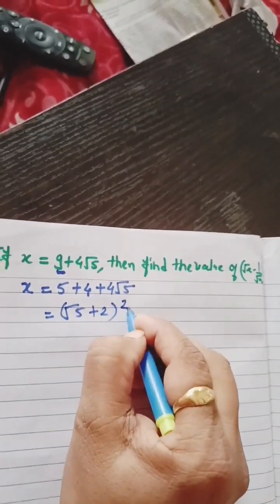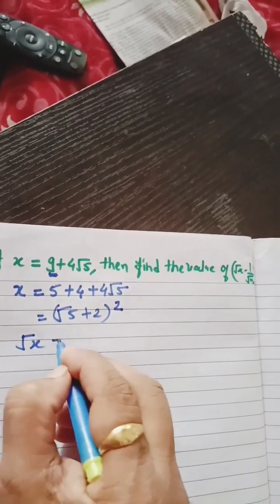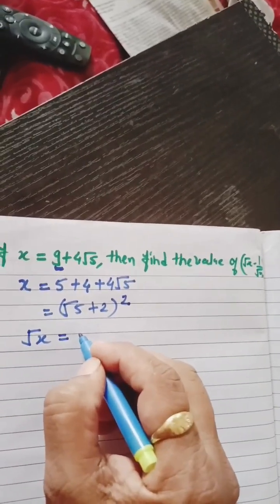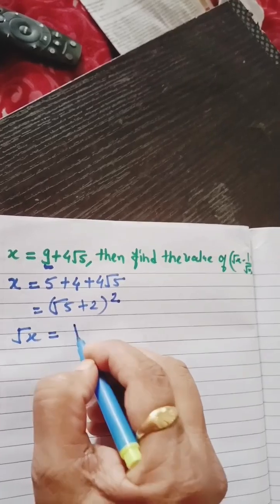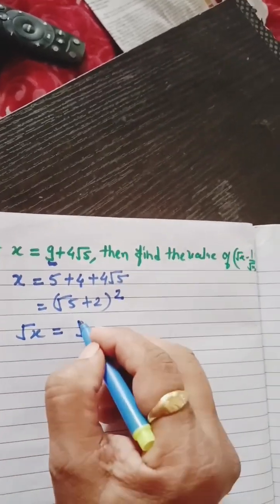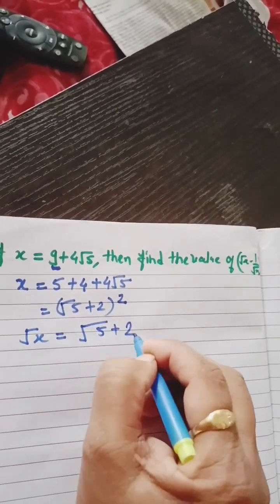And hence, we can say that root x equals to plus minus root 5 plus 2. But we will take only plus value because root x is always positive.